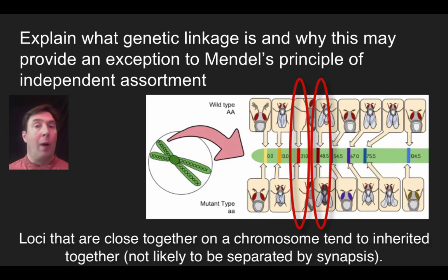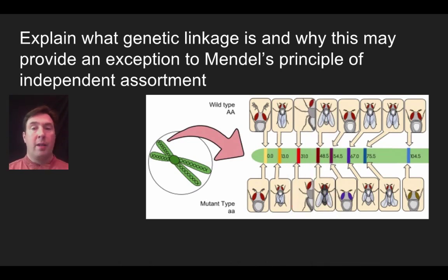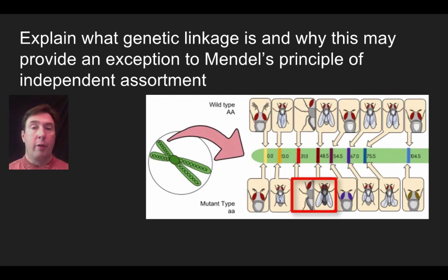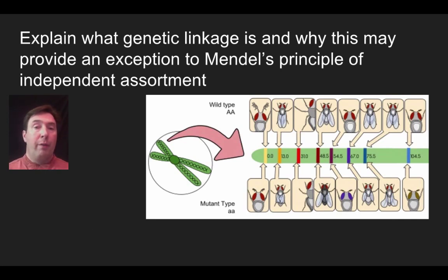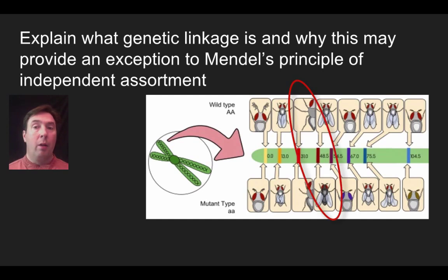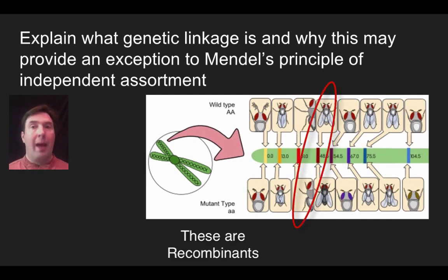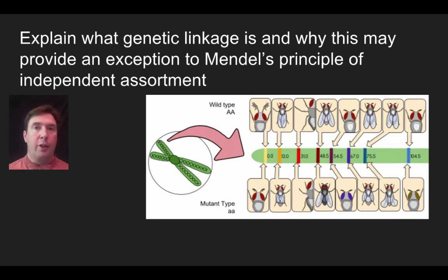If we started with a wild type parent and a mutant type parent crossed to produce heterozygotes, long legs and light body would be on one chromosome and short legs and dark body on the other. The fly with those two sets of alleles would have longer legs and a light body. But without crossing over, we'll find flies showing long legs with light bodies and short legs with dark bodies more often. Combinations like long legs with dark bodies or short legs with light bodies would occur much less frequently — those recombinant chromosomes just aren't produced very often.